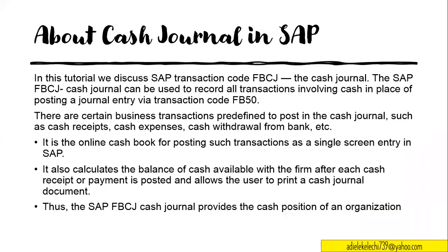The cash journal in SAP is used to record all transactions involving cash basically in a single screen, other than using your journal entry FB50 to enter these transactions. There are certain business transactions predefined to post in the cash journal, such as cash receipts, cash expenses, and cash withdrawal from the bank. The cash journal has predefined business transactions — the expenses and funding of the cash journal are already predefined and configured to meet certain kinds of expenses. This configuration is done by the consultants.